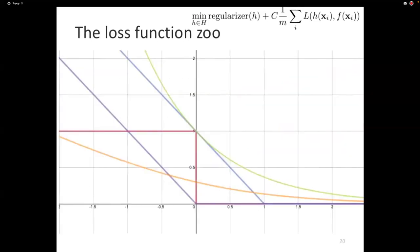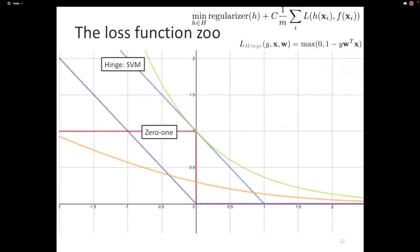Let's put them all on the same plot. So the thing that we really want to do for accuracy is the 0-1 loss. The hinge loss corresponds to SVM. Perceptron minimizes the Perceptron loss. Notice that the only difference between Perceptron and SVM is the fact that SVM is just shifted. That gives you the margin.